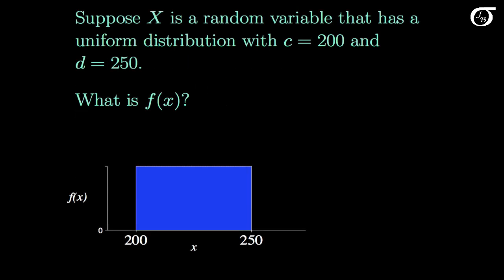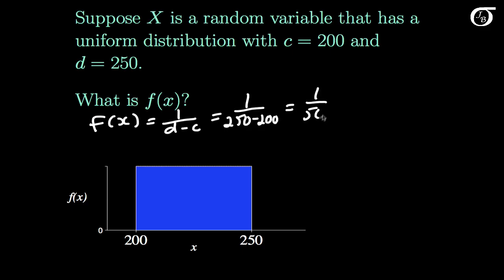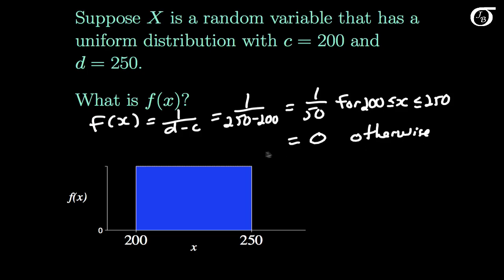Suppose x is a random variable with a uniform distribution with c equal to 200 and d equal to 250. What is f of x? f of x equals 1 over d minus c, which is 1 over 250 minus 200, or 1 over 50. That's only true for values of x between 200 and 250; outside that interval, f of x equals 0.